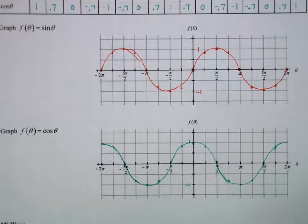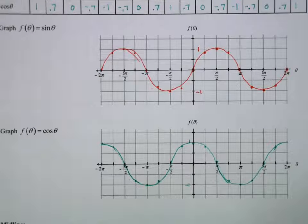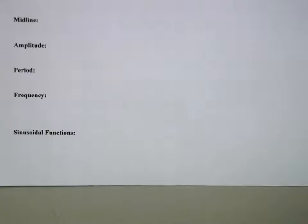Now, the nature of these graphs, we have some different attributes that we want to consider and name. So the four parts that we're going to talk about are the midline, the amplitude, the period, and the frequency.